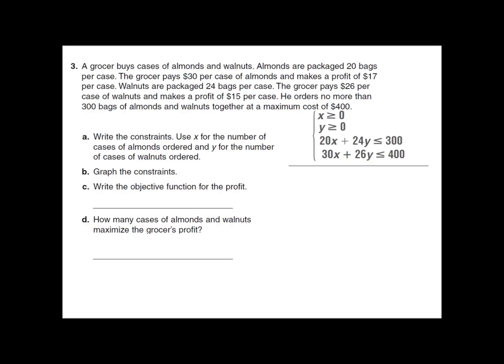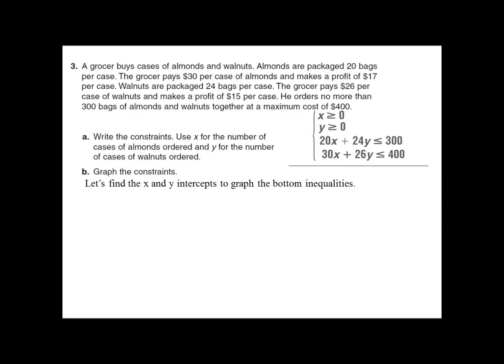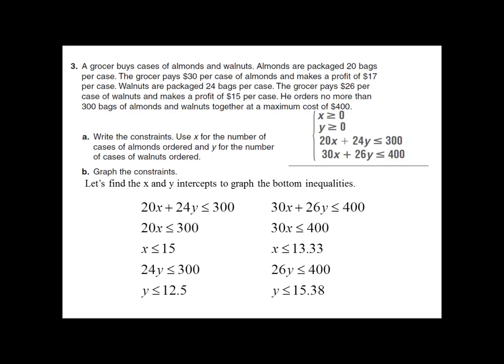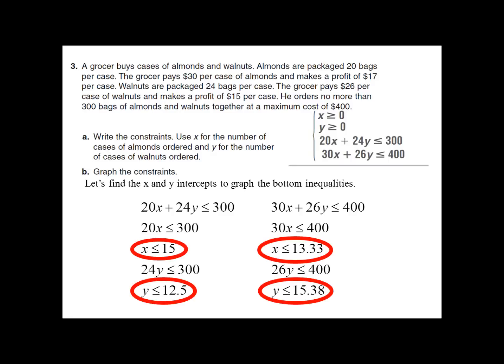Now we want to graph these constraints and find our feasible region. Let's find x and y intercepts to graph the bottom two inequalities. The top two — staying to the right of the y-axis and above the x-axis — should not be difficult. For the first inequality, X has to be less than or equal to 15 and Y less than or equal to 12.5. For the second, X has to be less than or equal to 13.3 and Y less than or equal to 15.38. These are the points to mark on the x and y axes.